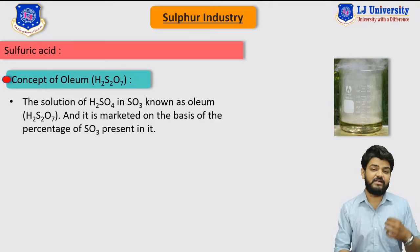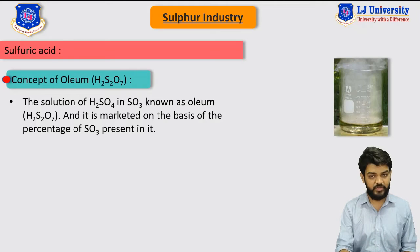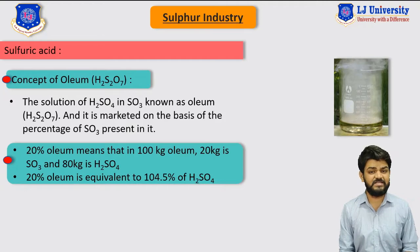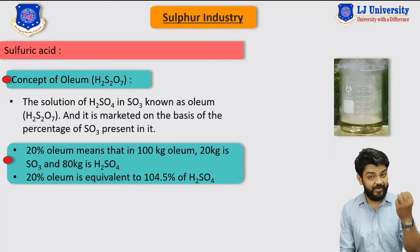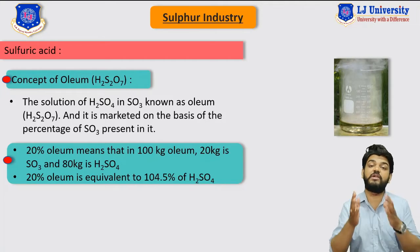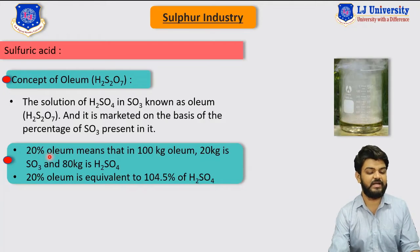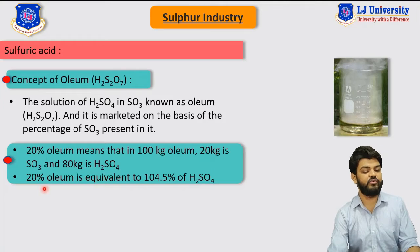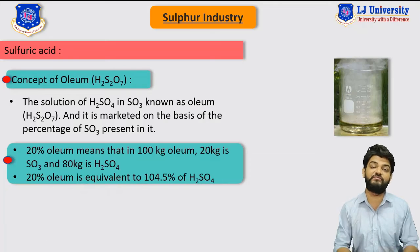Oleum can be defined by the percentage of SO3 present in the H2SO4. When someone says there is 20% oleum, it means that in 100 kg of oleum there is 20 kg of SO3 gas while the remaining 80 kg is sulfuric acid. 20% oleum is equivalent to 104.5% of H2SO4 when it comes to the acidity of oleum.